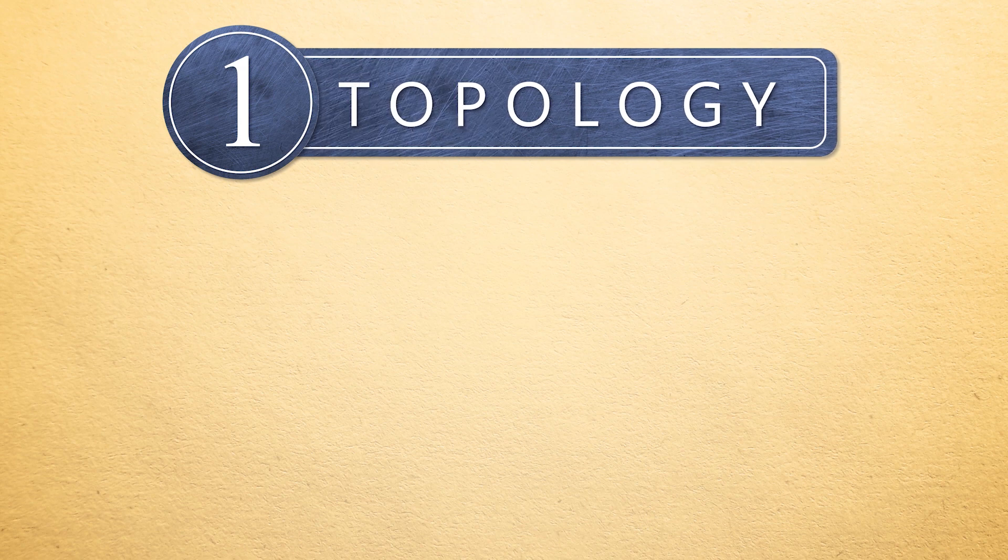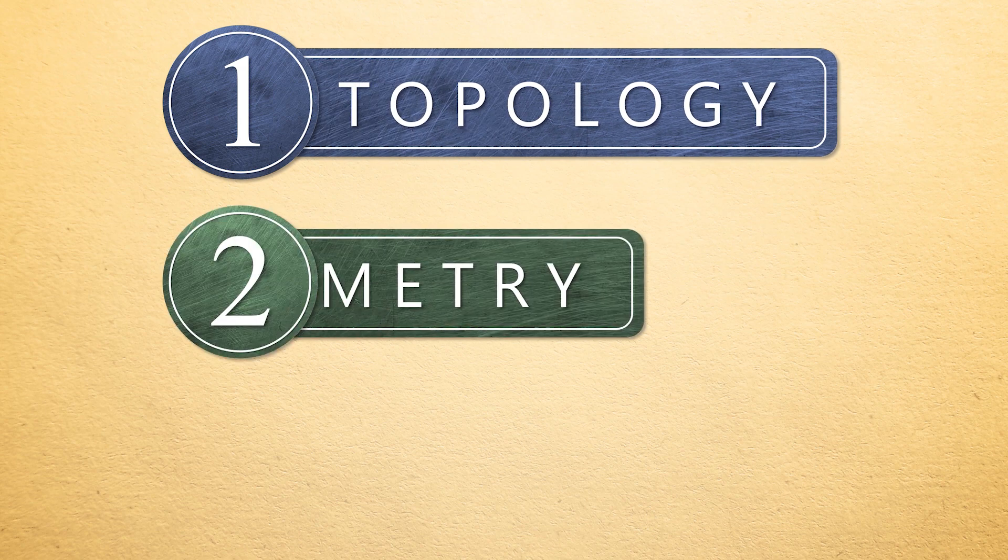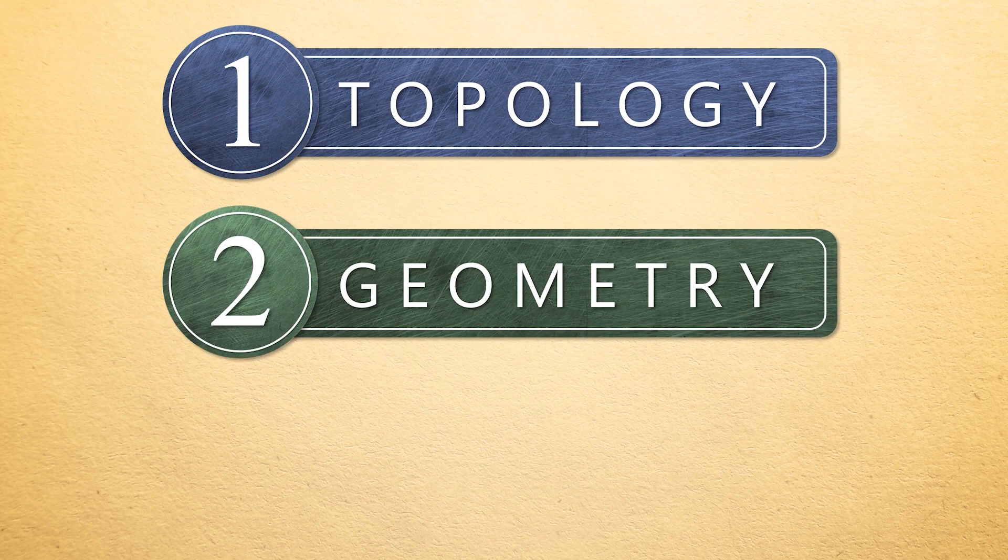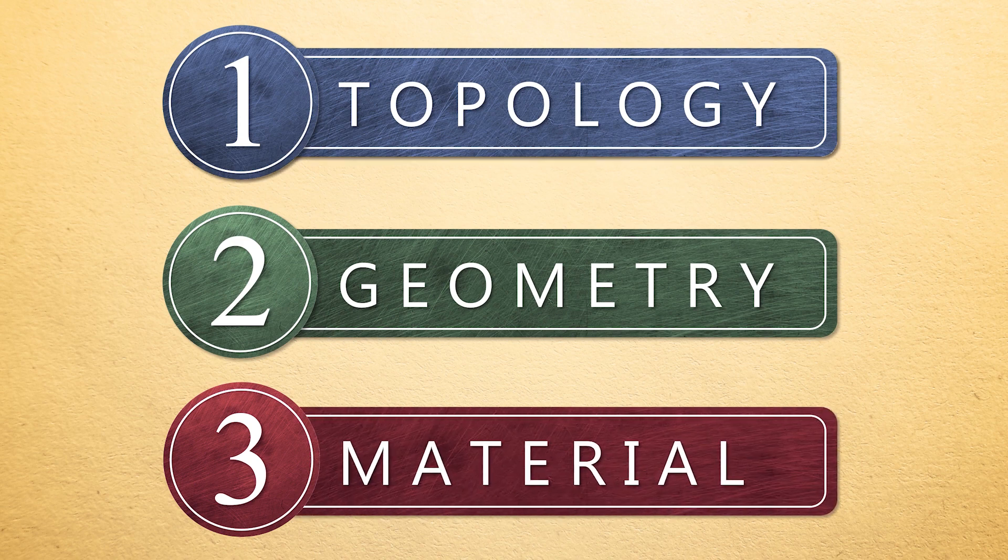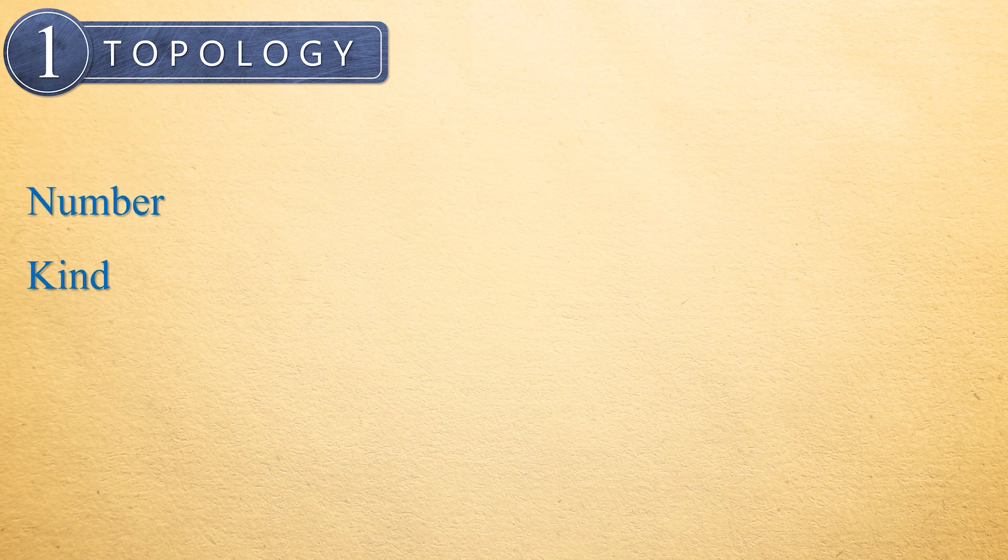One, the spring's topology. Two, its geometry. And three, the material from which it's made. A spring's topology is defined by the kind, number, and arrangement of flexible elements that constitute its design.